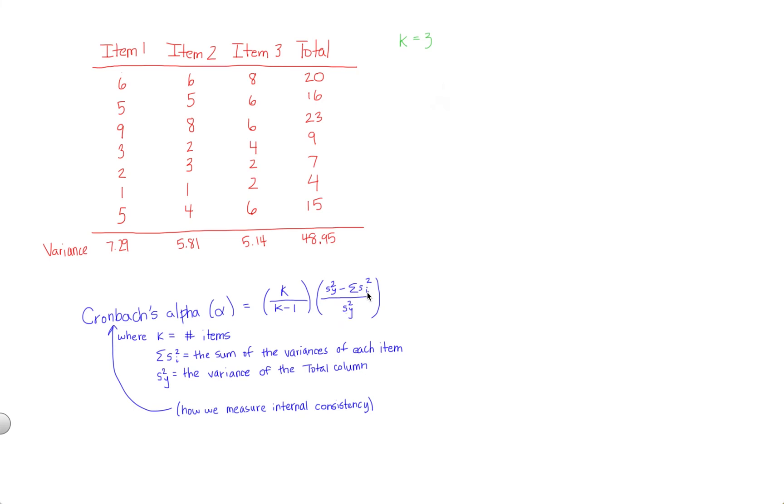Sigma s squared sub i is simply the sum of each individual variance for each item. So this is going to be, i here, you can think of as item or individual, each individual item. Either way works. So it's the s squared for the first item plus the s squared for the second item plus the s squared for the third item. So we can go ahead and write some of that out.